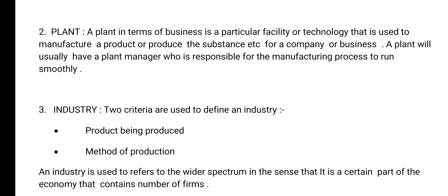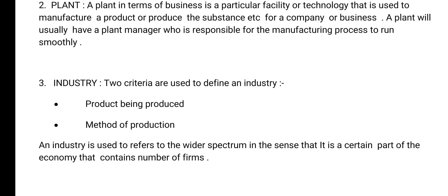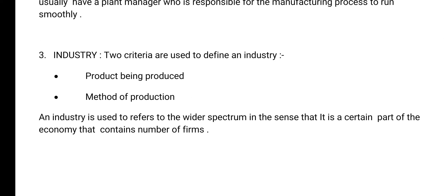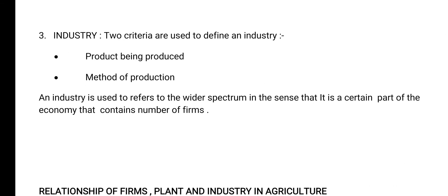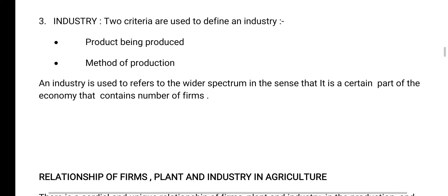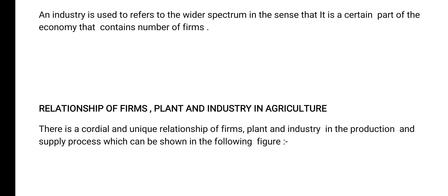Our third topic is Industry. There are two criteria used to define an industry: the first is the product being produced, and the second is the method of production. Industry is used to refer to the wider spectrum in the sense that it is a certain part of the economy that contains a number of firms.